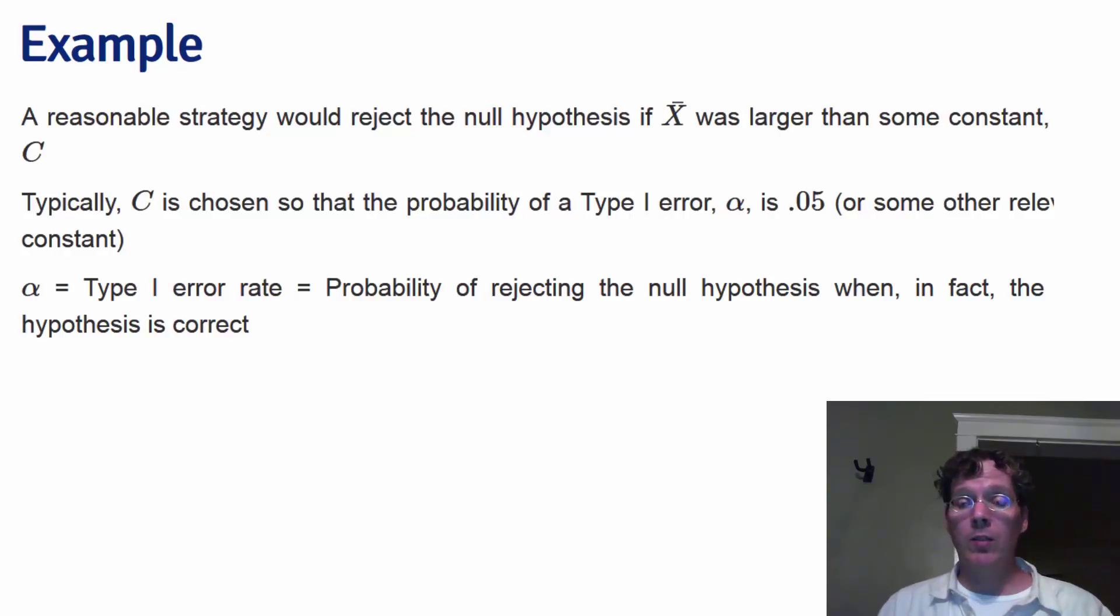But as in our court of law example, we don't want to set this rate too low because then we would never reject the null hypothesis. Let's see if we can choose this constant c so that the probability that we reject is simply tolerably low, say 5%.